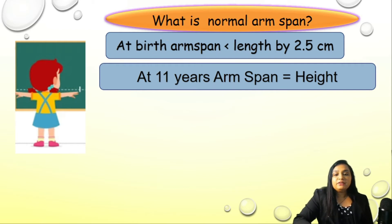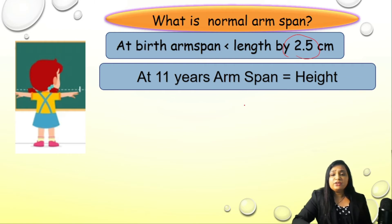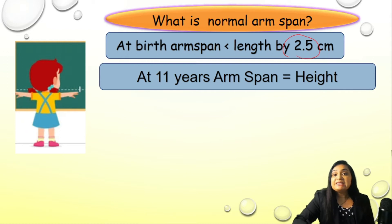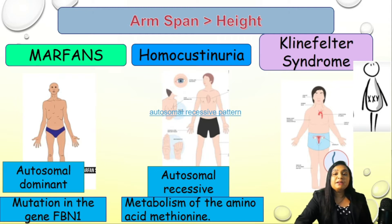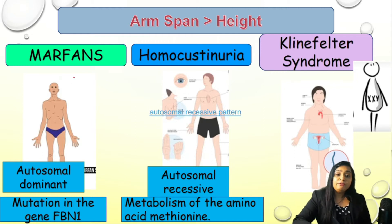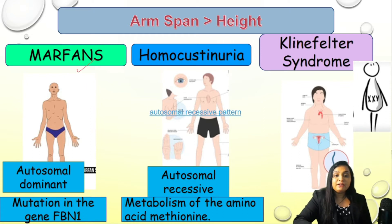Now we have both arm span and height — so what is normal? At birth, the trunk is small, so arm span is lower than length by 2.5 cm. As the child grows, arm span becomes equal to height. When there is a difference of more than 1 cm — arm span greater than height — we consider that an abnormal finding.